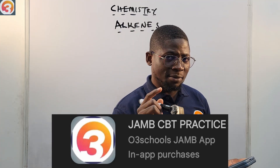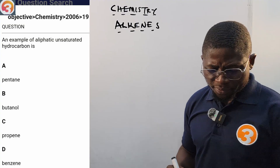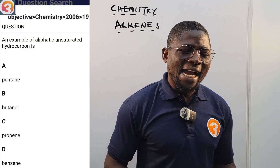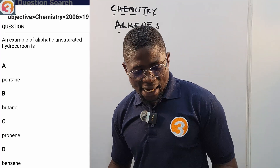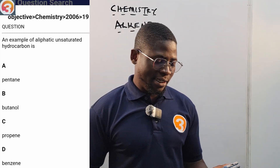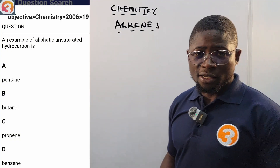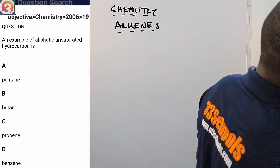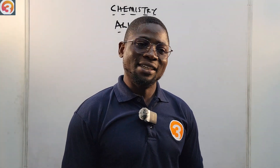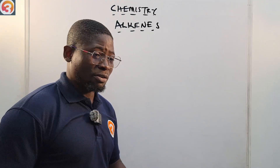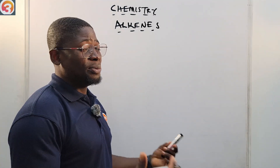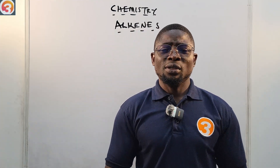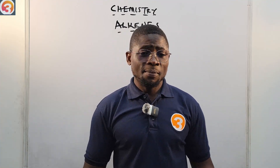The 2006 question number 19 is displayed on the screen: 'An example of an aliphatic unsaturated hydrocarbon is: A) pentane, B) butanol, C) propene, D) benzene.' At the end of the class we will know which one is the aliphatic unsaturated hydrocarbon. Please stay to the end — we'll answer that question, and it will build your confidence. That is how you learn.